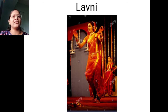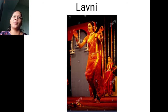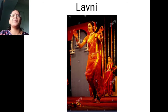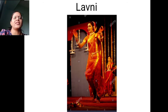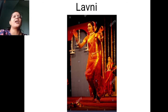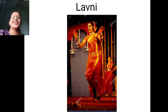Lavni mein zyada karke kya hota hai? Yeh dance Dholki ke beats ke upar hota hai. Lavni kya hota hai in Maharashtra — and the costume worn in Lavni dance is Kasta Sari. Yeh jo saari pehni jaati hai, use specifically Kasta Sari kehte hain. And the musical instrument is Dholki.